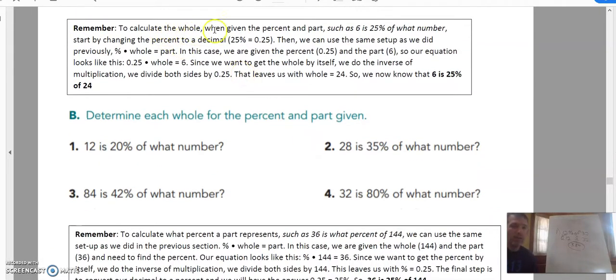It says, remember, to calculate the whole when given the percent and part, such as 6 is 25% of what number, start by changing the percent to a decimal. Same strategy, you're going to turn that 25% into a decimal, 0.25. Then we can use the same setup as we did previously. So percent times the whole equals the part. But this is where it gets a little bit weird.